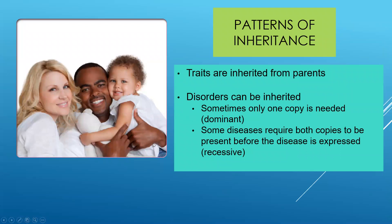Looking at our traits — here's a really good picture of an example of a phenotype. This child is exhibiting traits from both of her parents, and it's very interesting how this works. Some diseases require both copies to be present, if passed on from your parents — that means both parents would have to give you one of those genes, and we call that recessive. Other disorders and diseases, you only need one copy, and we call that dominant. And that's as far as I'm going to go into that.